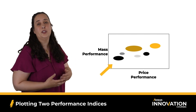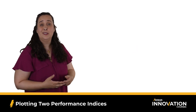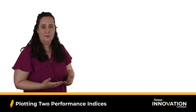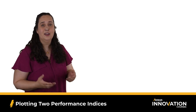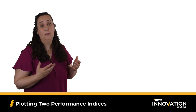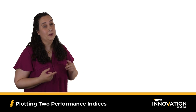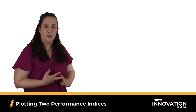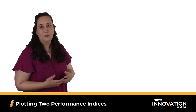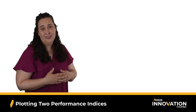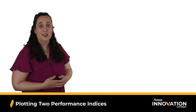For our longboard example, the first thing we need to do is define the performance indices for both metrics. Since we're operating under a stiffness-limited design, this will have an impact on both performance index equations for minimizing mass and minimizing cost performance. We can identify these equations using the performance index reference booklet, which can be found in the References tab of this course.